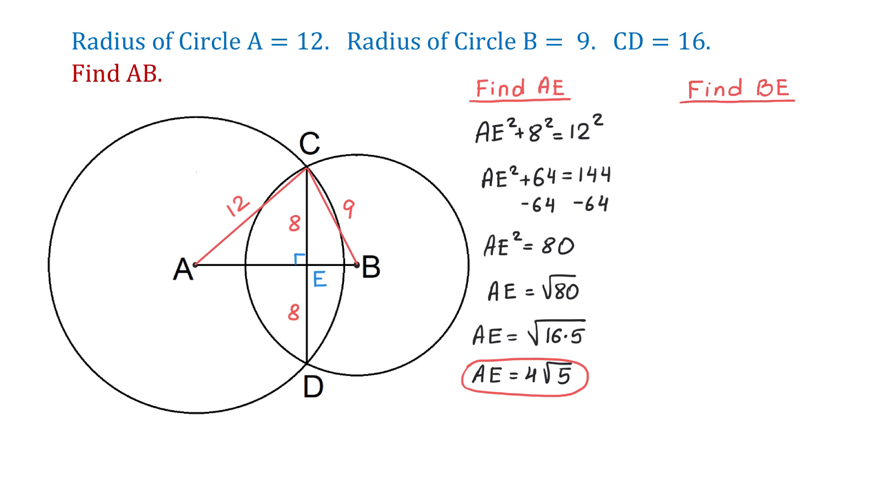So, we will write that BE squared plus 8 squared equals 9 squared. Then BE squared plus 64 equals 81. Now, let's subtract 64 from both sides. Then BE squared will be equal to 17. And BE is equal to square root of 17.